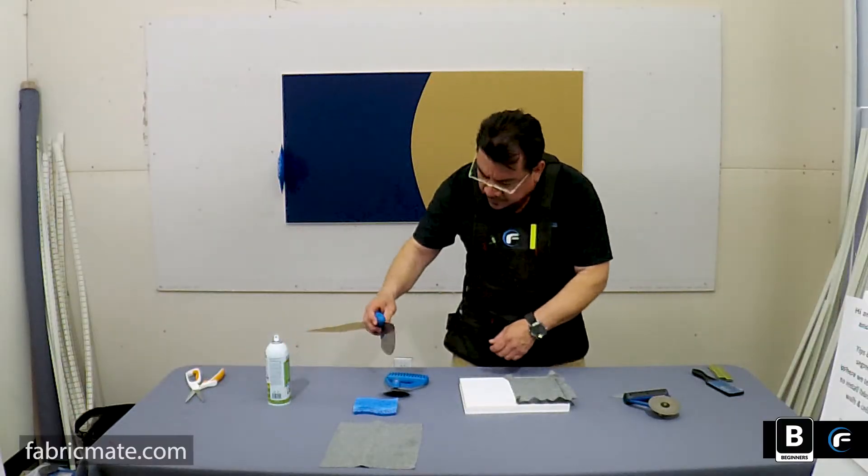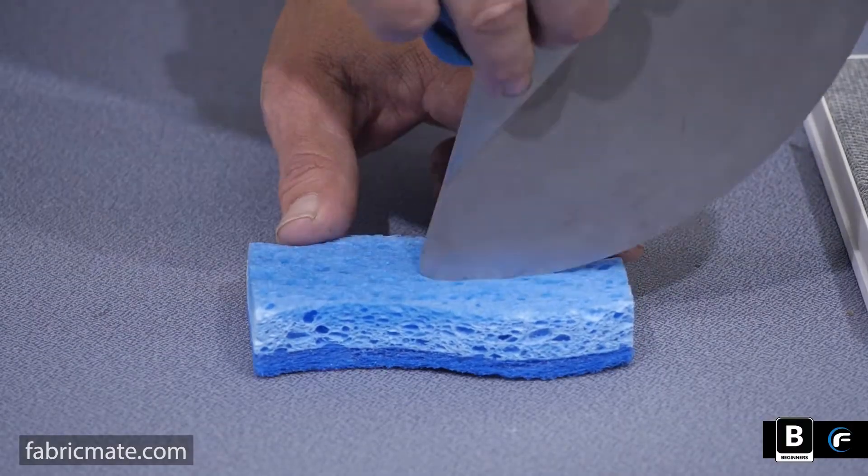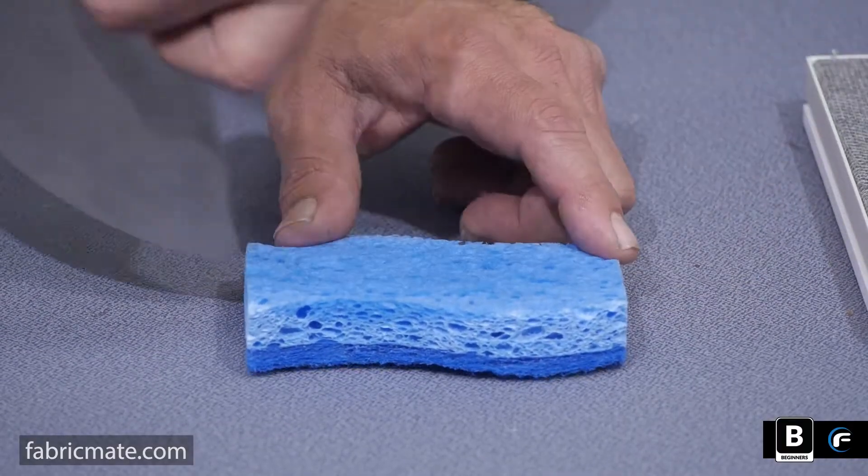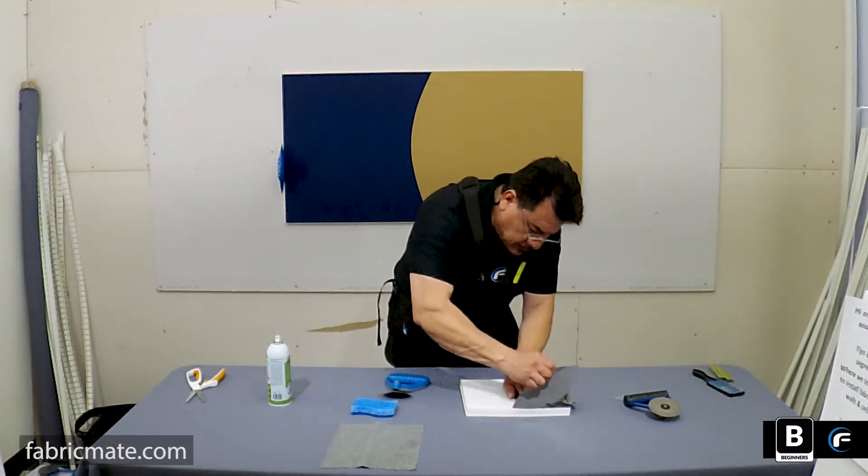One quick tip is to go ahead and roll it onto or spray it onto a household kitchen sponge. If you don't have that, a rag would work or a piece of the recor.